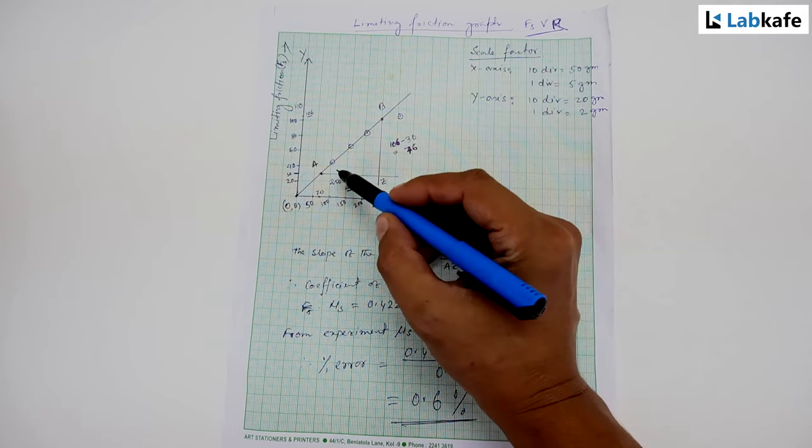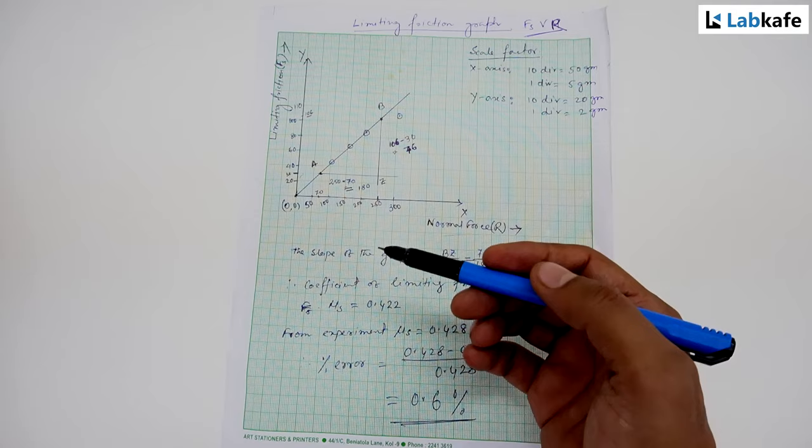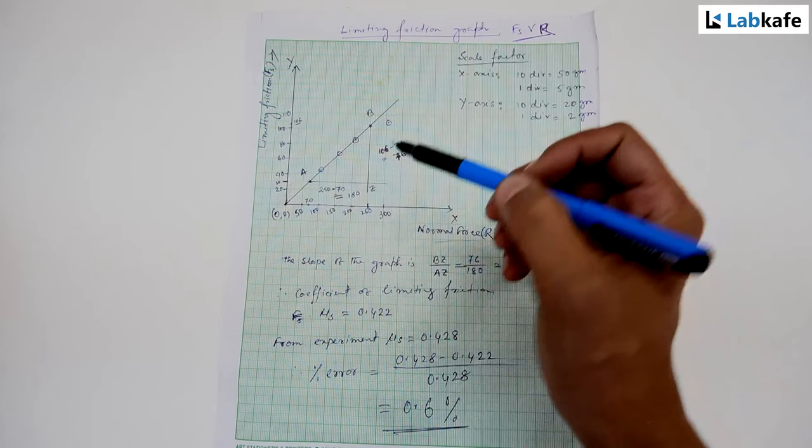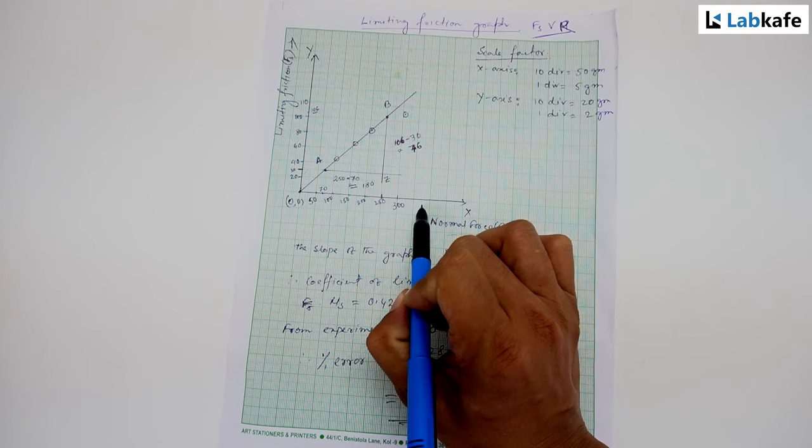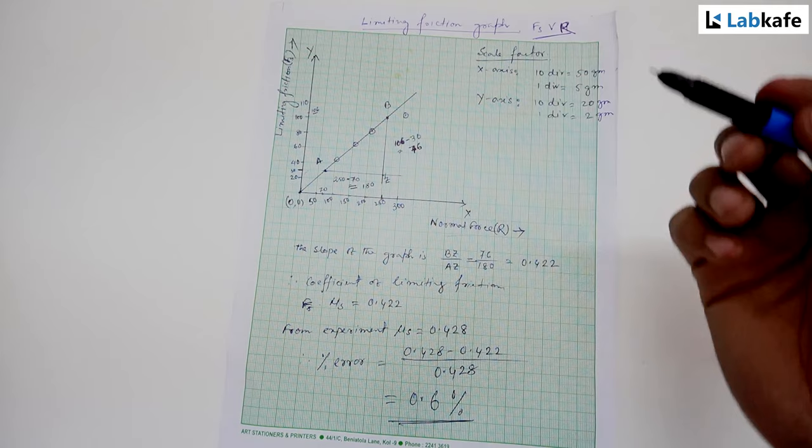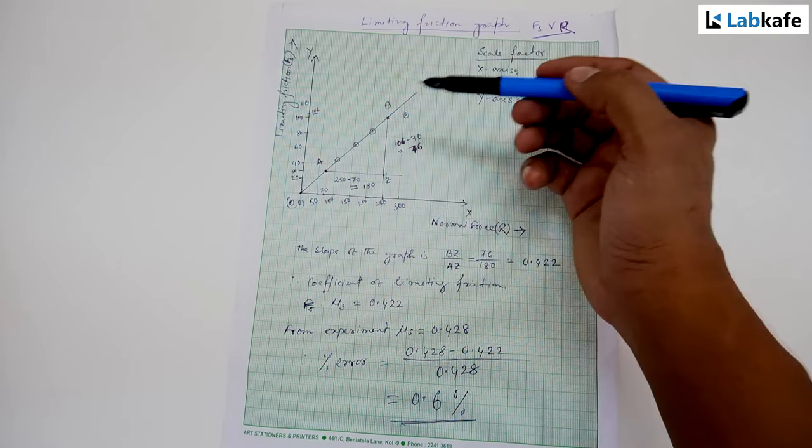The slope of the graph will give us the coefficient of limiting friction between the wooden block and the wooden surface. To find the slope, I have taken any two points A and B on the straight line. Then I have drawn a straight line BZ parallel to y-axis and AZ parallel to x-axis. They intersect at point Z. The ratio of BZ and AZ is the slope of the graph.